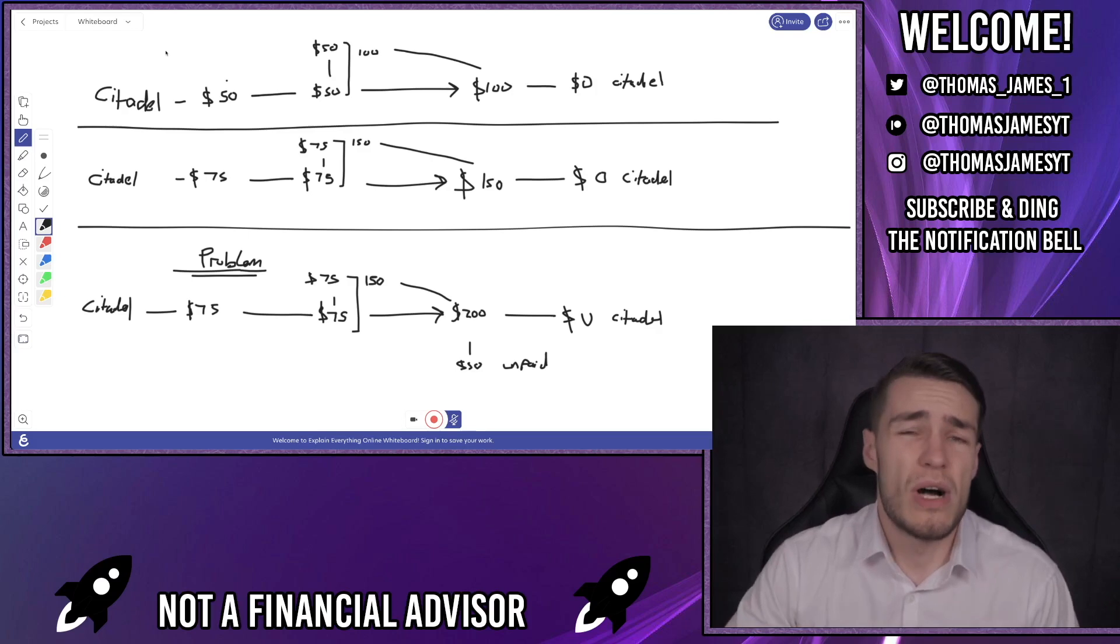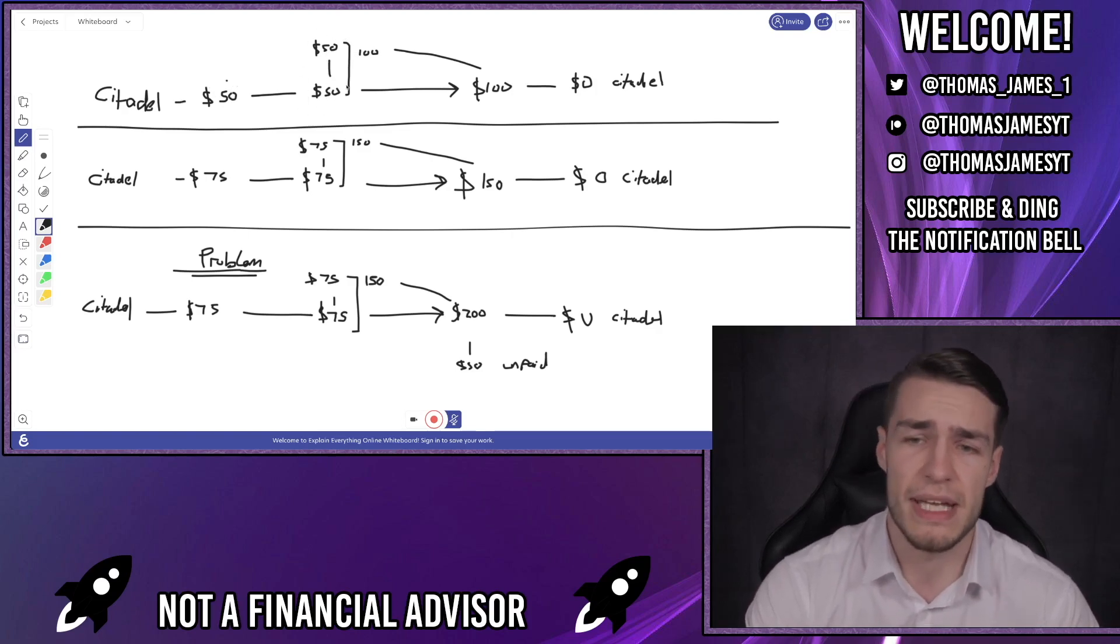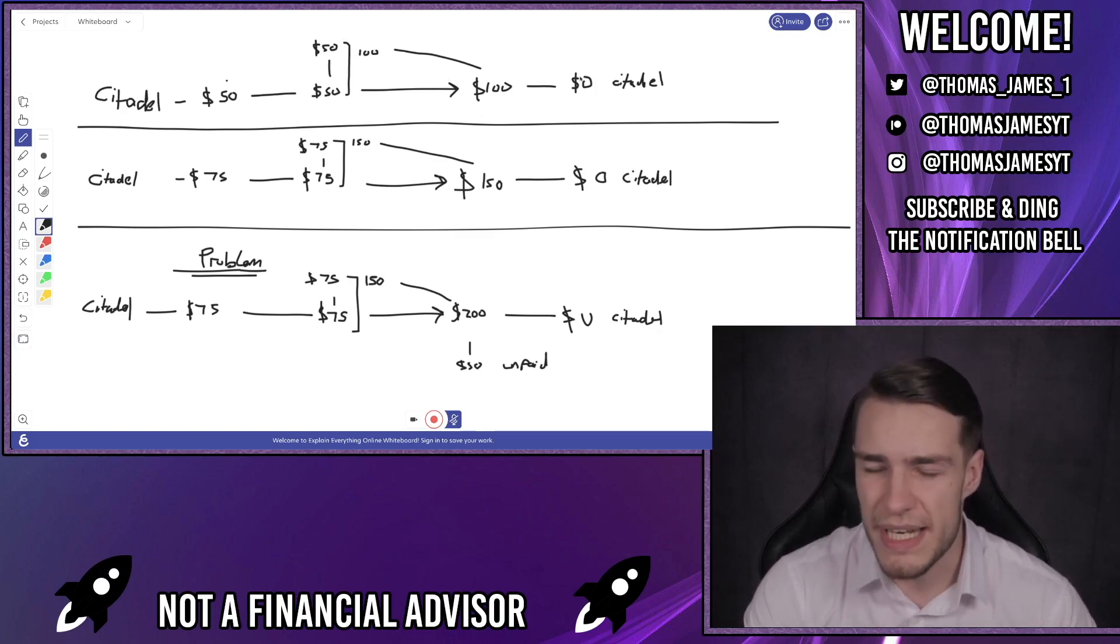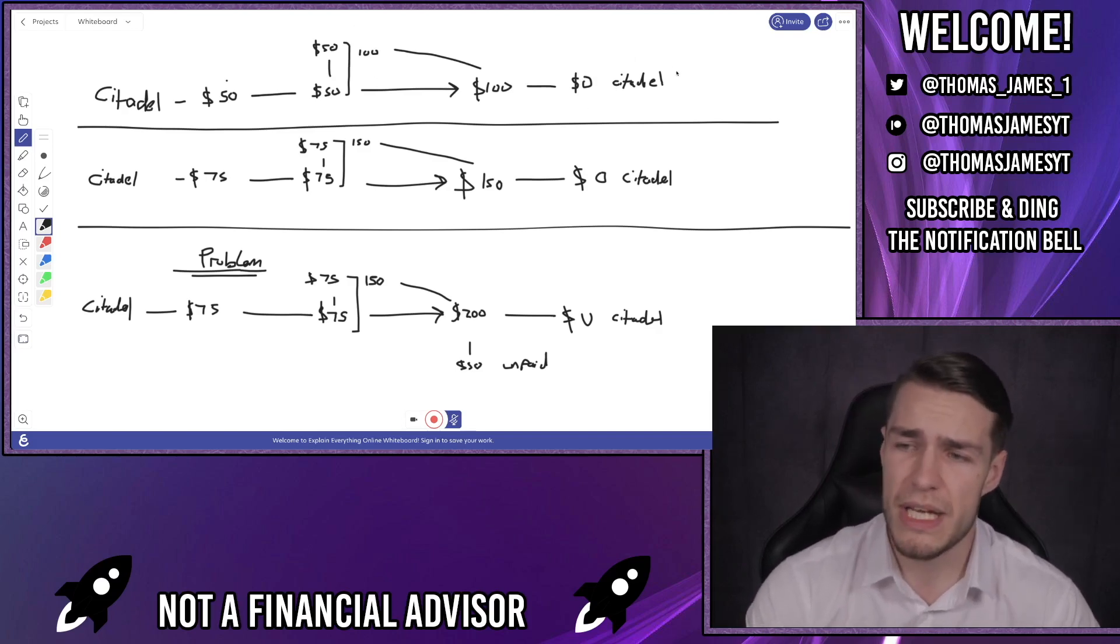So how exactly does this work without the margin and how exactly does it work using Citadel as the example? Well let's say that Citadel short one share of AMC at $50 per share. Therefore they've got the $50 that they put into the trade and they've sold to open so they've sold the share of AMC for $50 meaning there's effectively $100 in the trade. Let's say AMC runs up to $100. Therefore Citadel get liquidated because they need to use that $100 to buy back the one share and therefore there's $0 left over for Citadel. Therefore position liquidation.